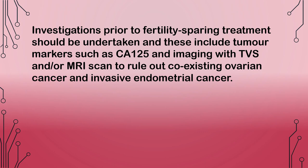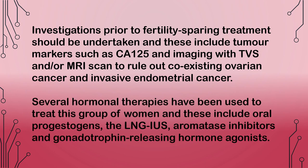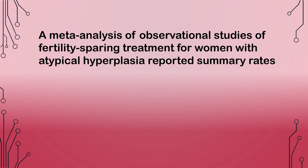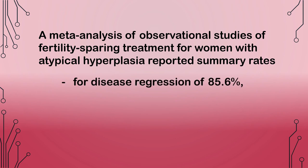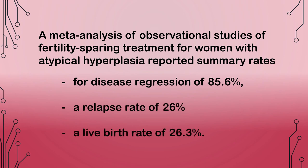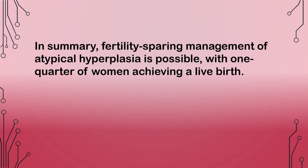Investigations prior to fertility-sparing treatment should include tumor markers such as CA125, and imaging with transvaginal ultrasound scan and/or MRI scan, to rule out coexisting ovarian cancer and invasive endometrial cancer. Several hormonal therapies have been used, including oral progestogens, the LNG-IUS, aromatase inhibitors, and gonadotrophin-releasing hormone agonists. A meta-analysis of observational studies of fertility-sparing treatment reported summary rates for disease regression of 85.6%, a relapse rate of 26%, and a live birth rate of 26.3%.